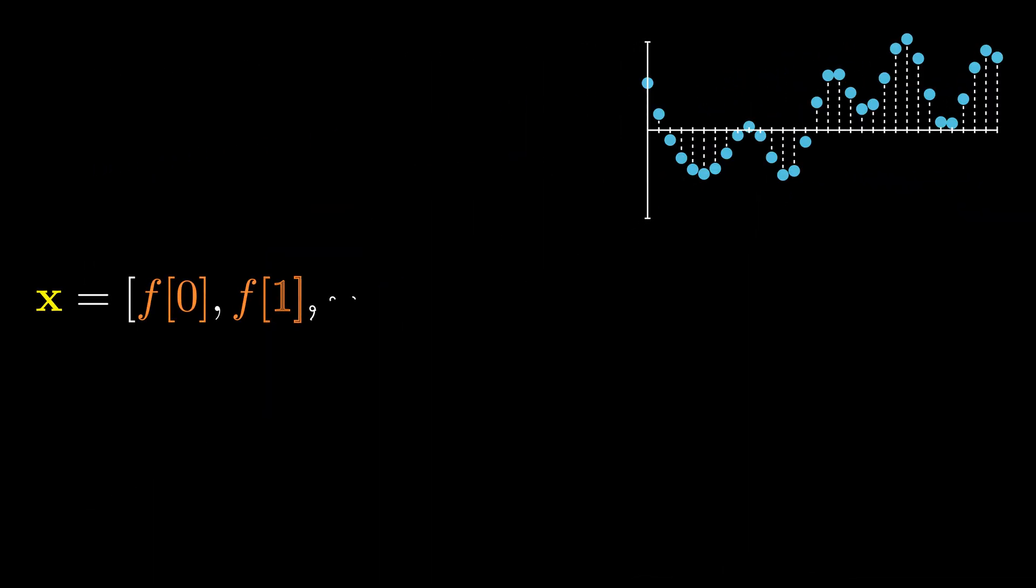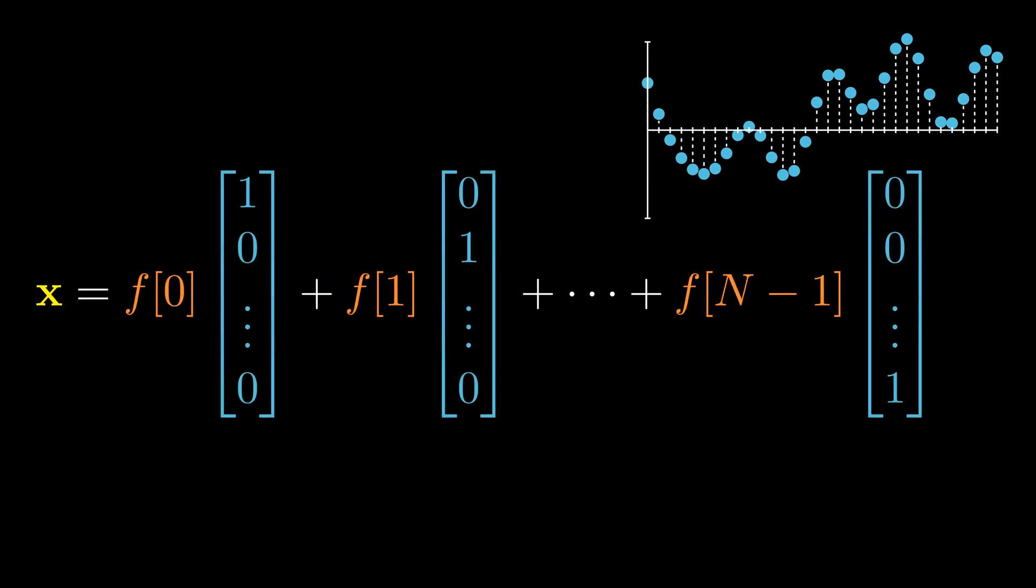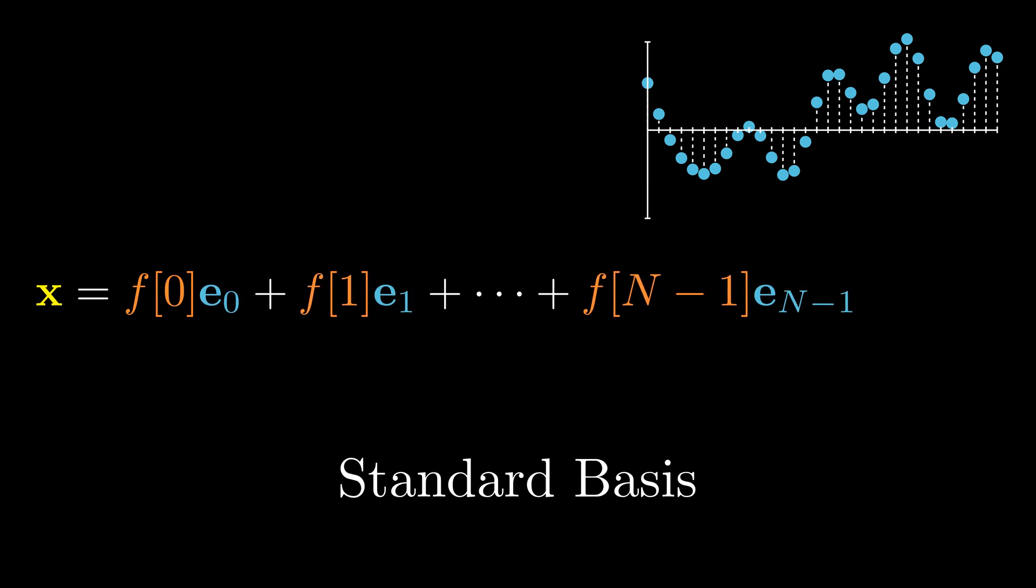Let's take this concept further. For a signal with n numbers, we can represent it as a point in a n-dimensional vector space. At first glance, this can be trivially expressed as a linear combination of the standard basis. But here is where it gets interesting. We want to express the same signal using a new basis.